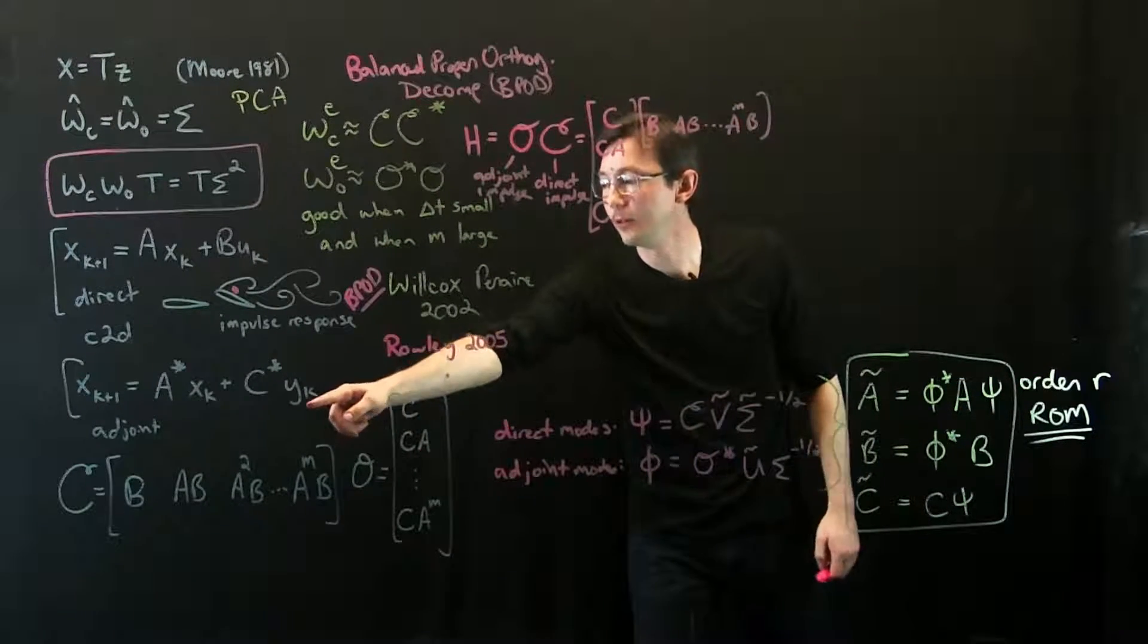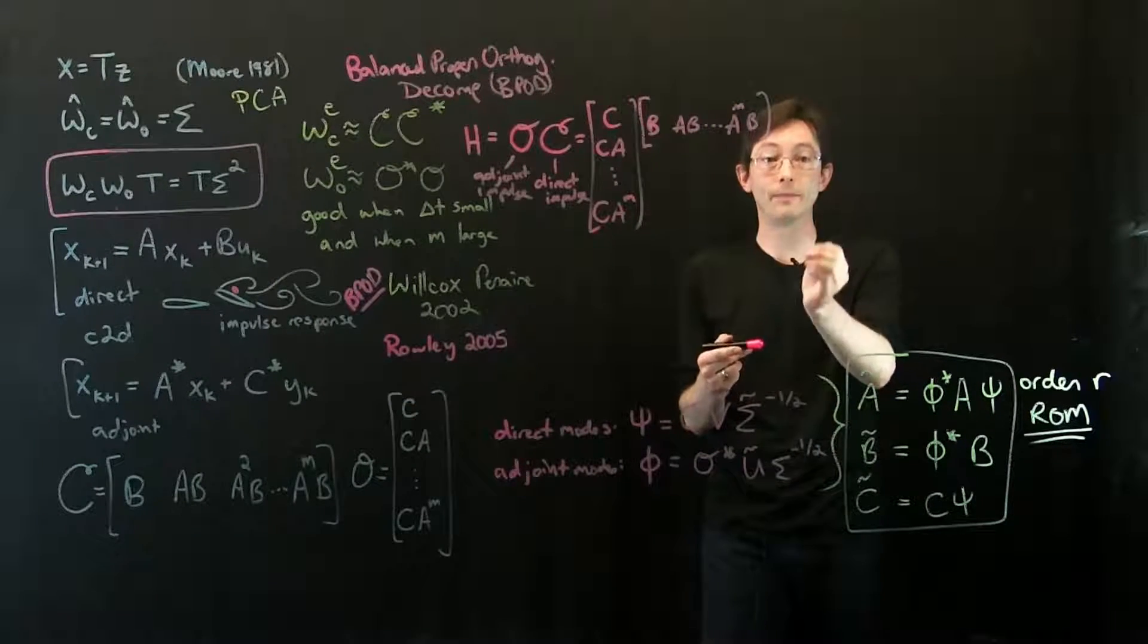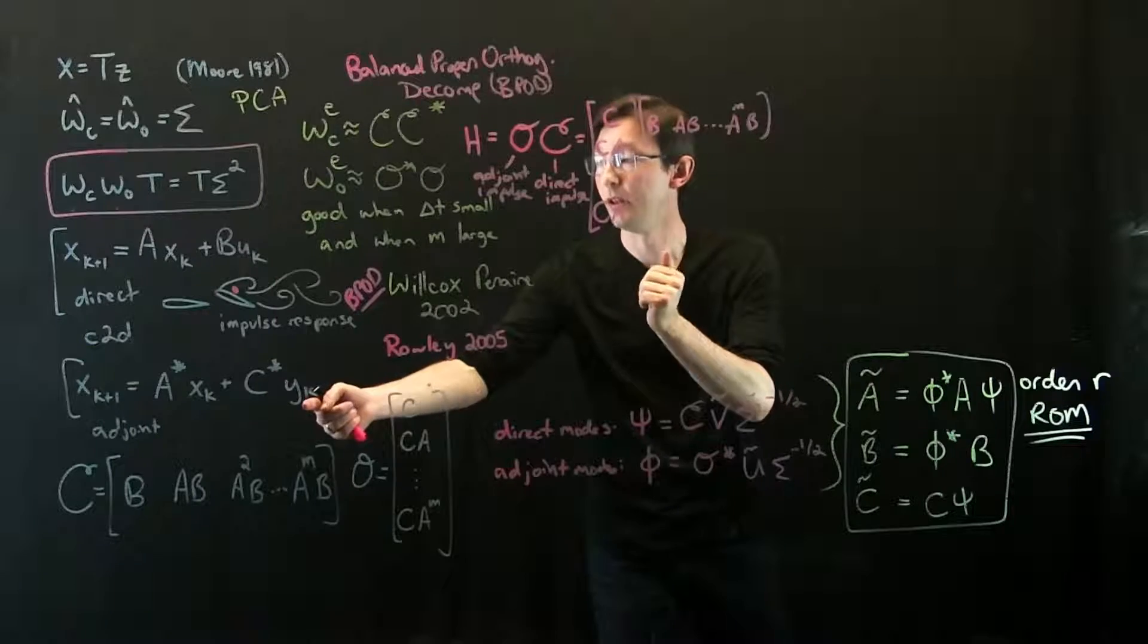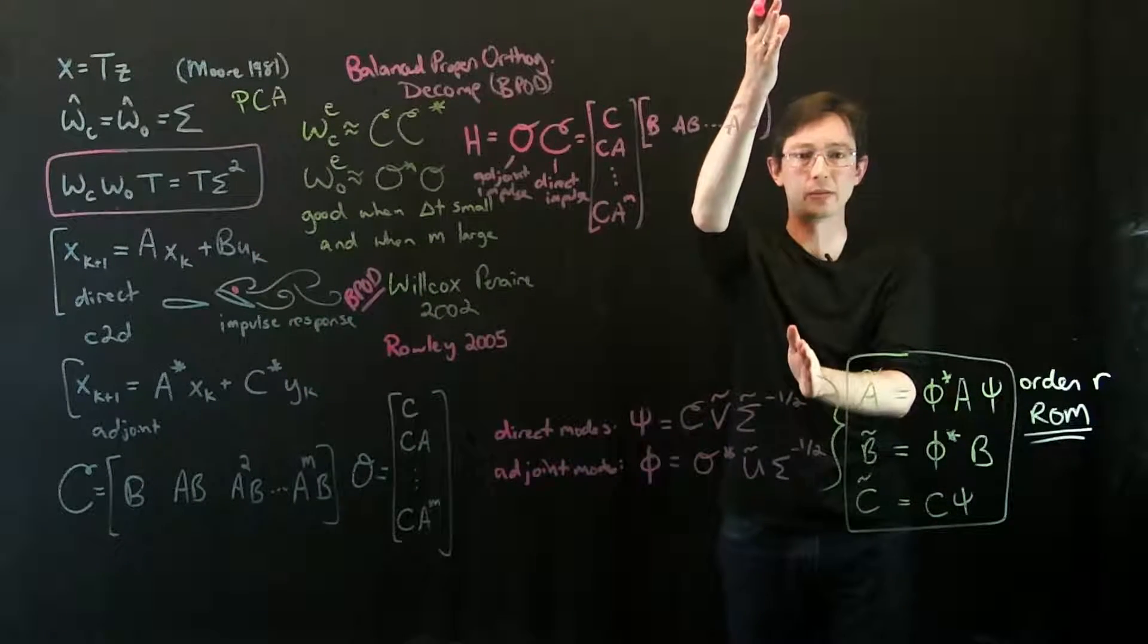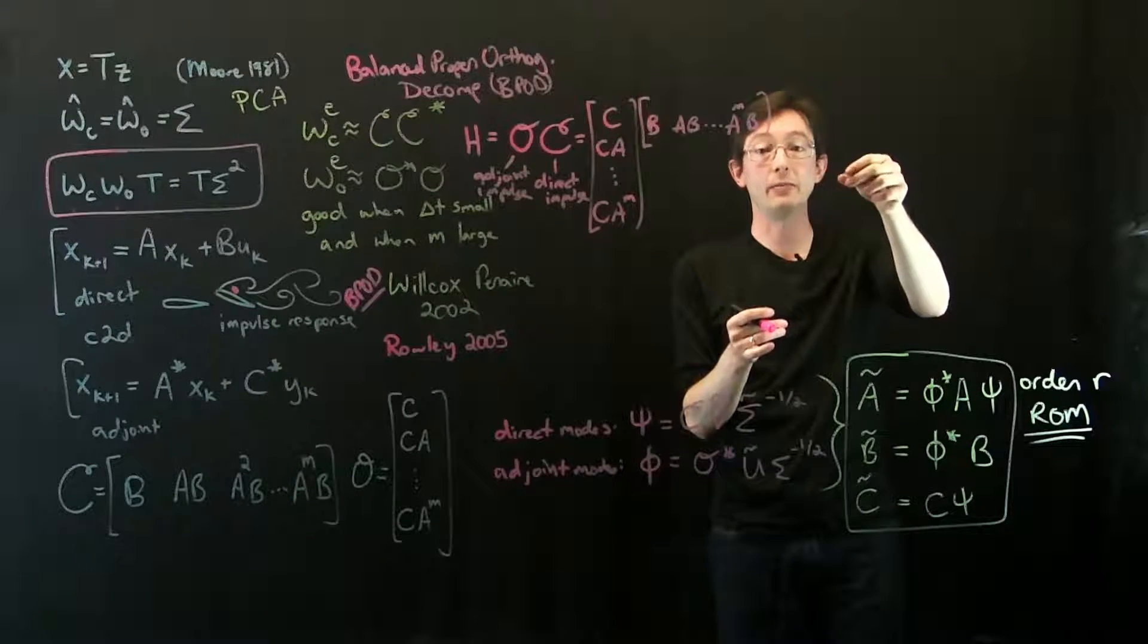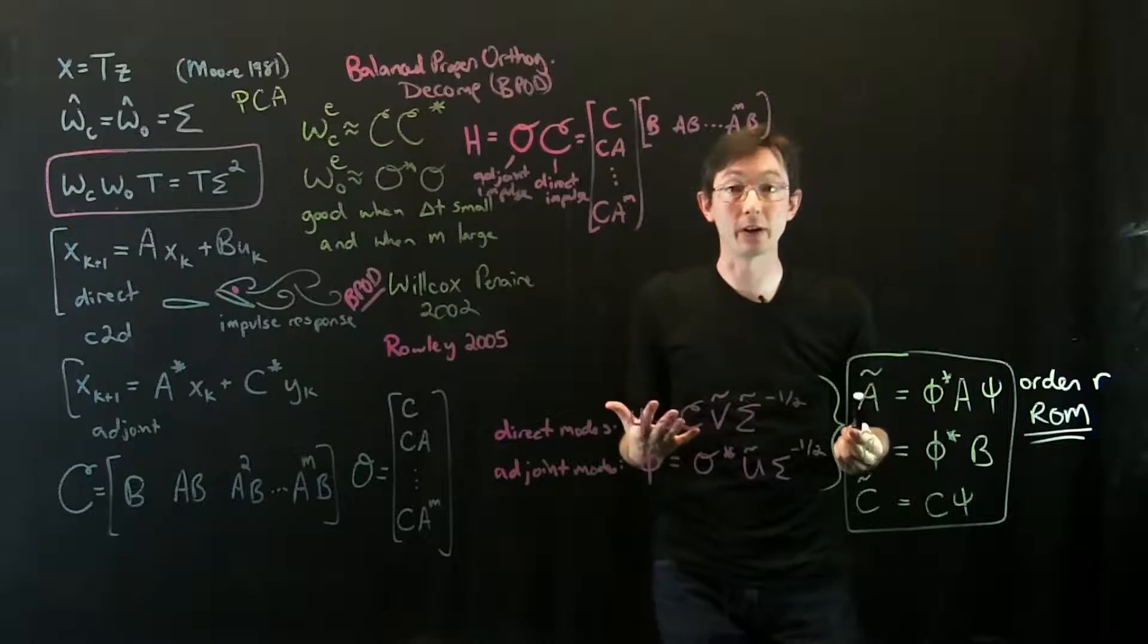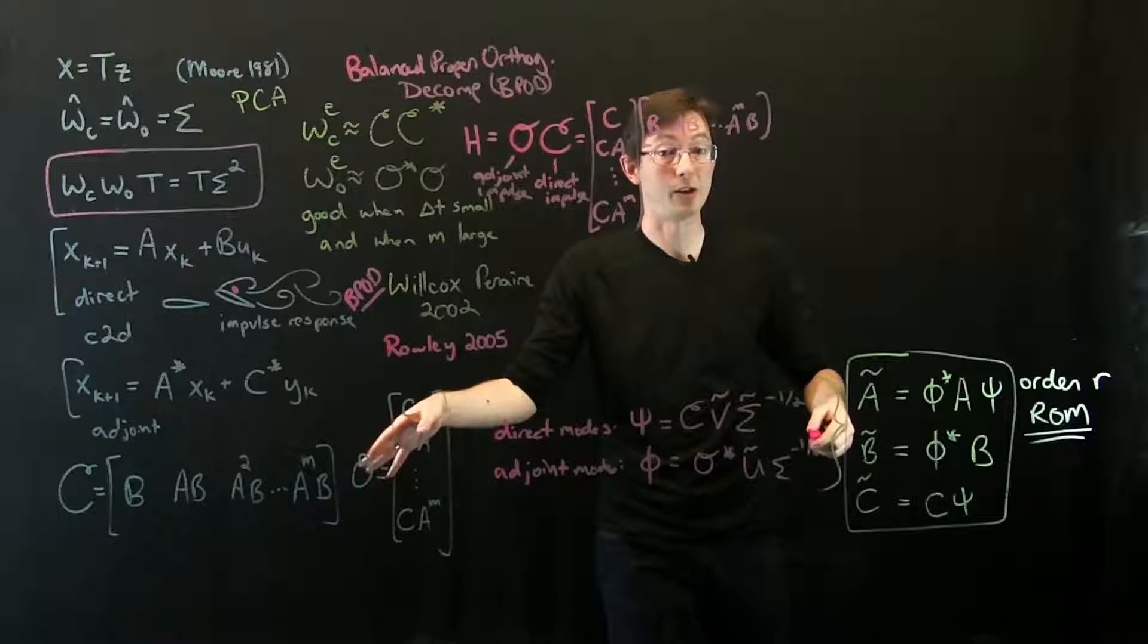But I can't do an impulse response. These impulse responses require you to give a delta function in every independent channel of U or Y. And so if Y is a million measurements, I can't realistically give an impulse to each of those million inputs separately and collect all that data. That would take forever in a computer to fill all of your hard drives and you'd never be able to work with these objects.